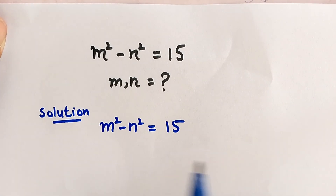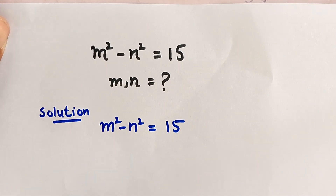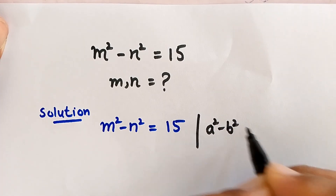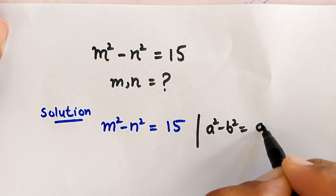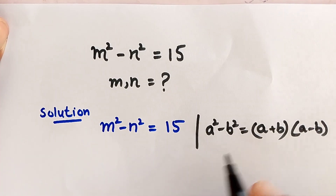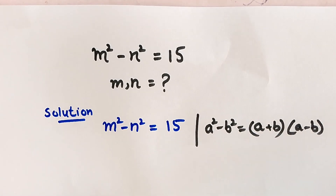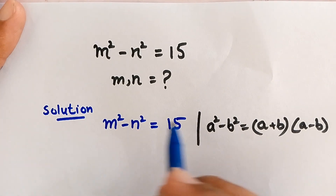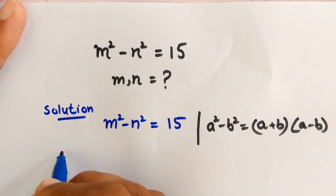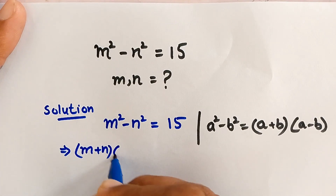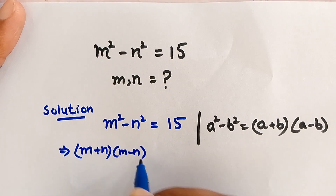To solve this, we know this is in the form of a squared minus b squared, which equals a plus b times a minus b. We apply this identity here, so this becomes m plus n times m minus n is equal to 15.